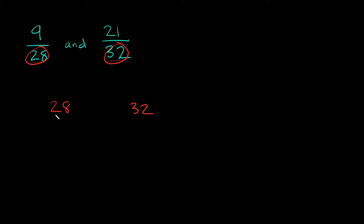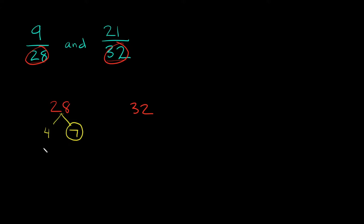Let's start with 28. I'm going to ask myself: what are two numbers I can multiply together to get 28? Well I can multiply 4 and 7 — 4 times 7 gives me 28. Now I ask: do I have any prime numbers? Yes, because 7 is a prime number. Whenever you have a prime number you just circle it. Is 4 prime? No, 4 is a composite number, so we can keep breaking it down.